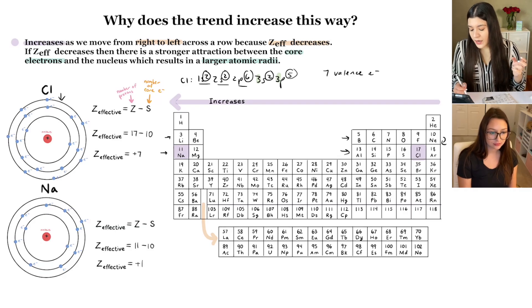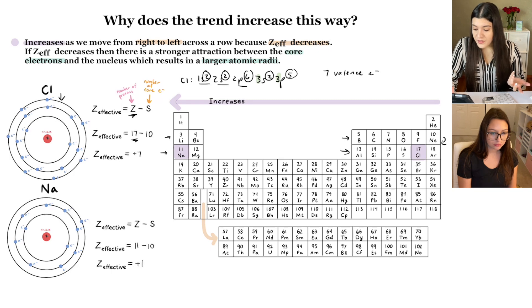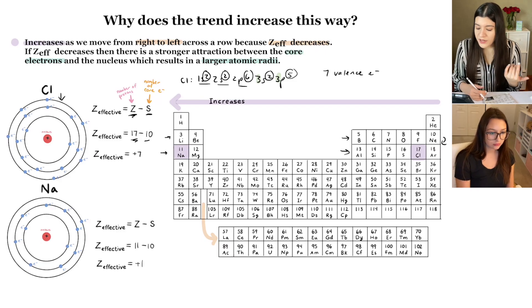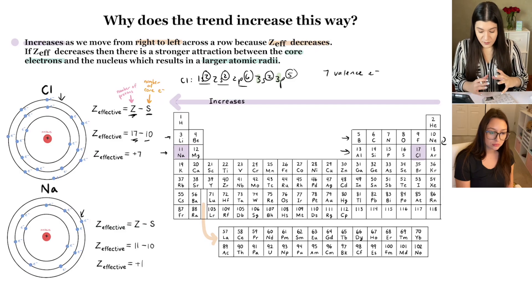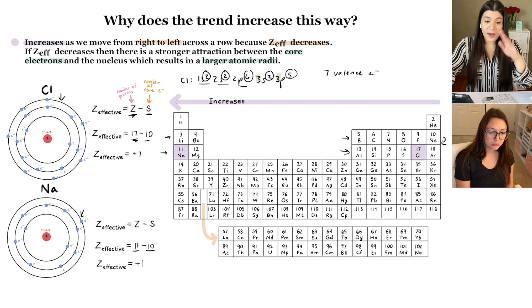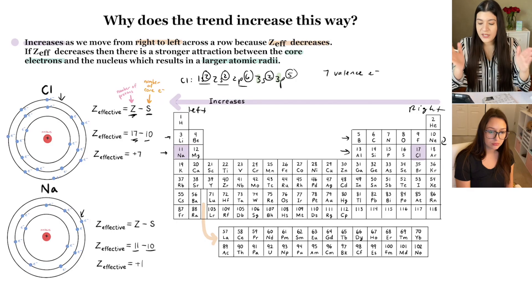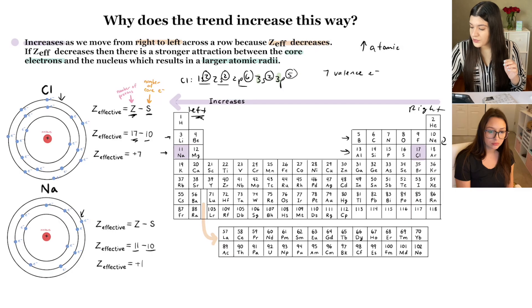To find Z effective for chlorine: Z equals 17 protons minus 10 core electrons gives us a positive 7. Comparing this with sodium, which has only one valence electron on the outermost shell and several core electrons inside: 11 protons minus 10 core electrons gives Z effective equals plus 1. Moving from right to left, as atomic radius increases, Z effective decreases.